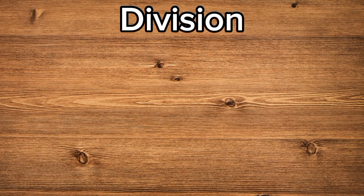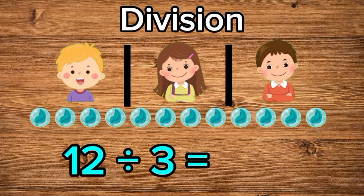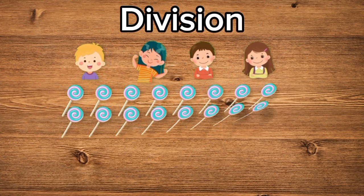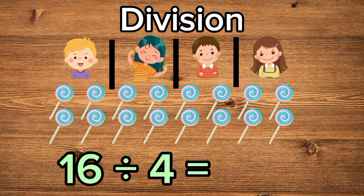Now, what if we have twelve marbles and three friends? That's twelve divided by three. Let's share them: one, two, three. Each friend gets four marbles. What if we have sixteen candies and four friends? That's sixteen divided by four. Let's count them: one, two, three, four. Each friend gets four candies. Perfect!